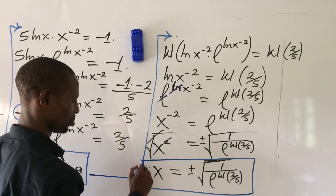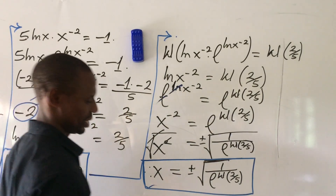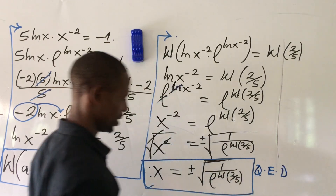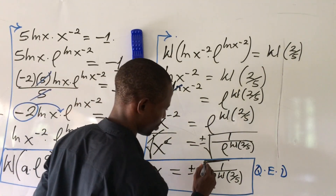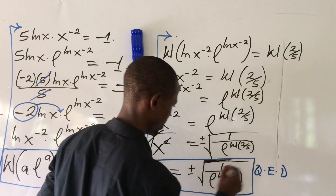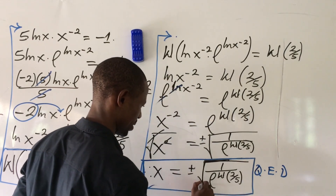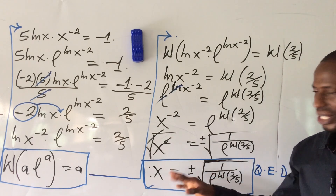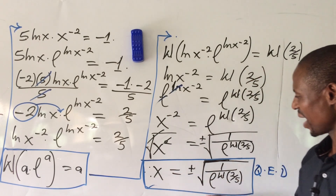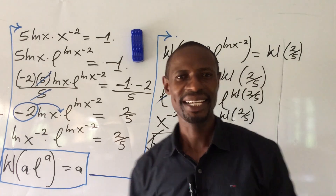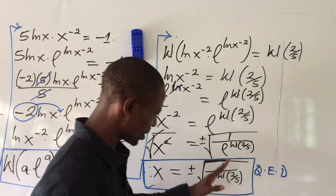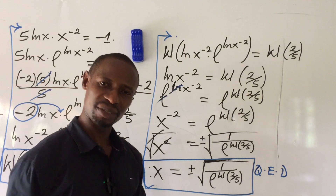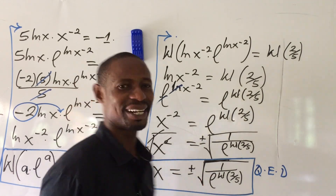So here we have two roots for x — QED. We have plus or minus. You could further simplify this to get numerical values, but we stop here.